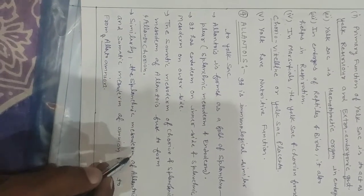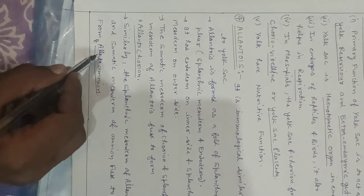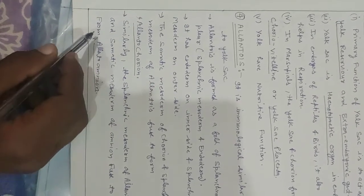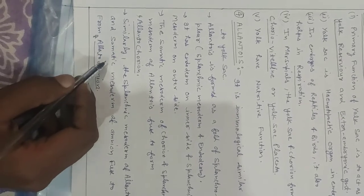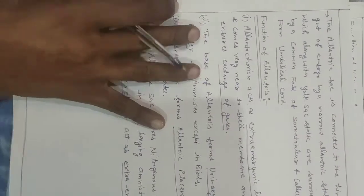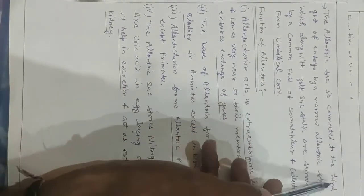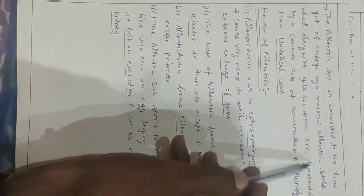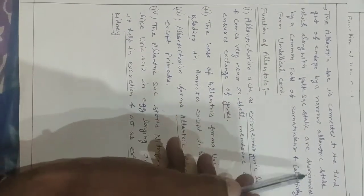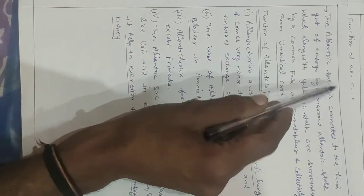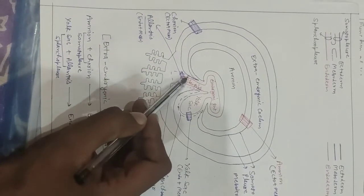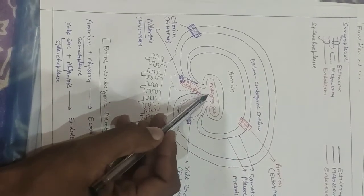Similarly, the splanchnic mesoderm of allantois and somatic mesoderm of amnion fuse to form allanto-amnion. The allantois is connected to the endoderm of amnion and is connected to the hind gut of the embryo by a narrow allantoic stalk, which along with the yolk sac stalk are surrounded by a common fold of somatopleure and collectively form the umbilical cord.